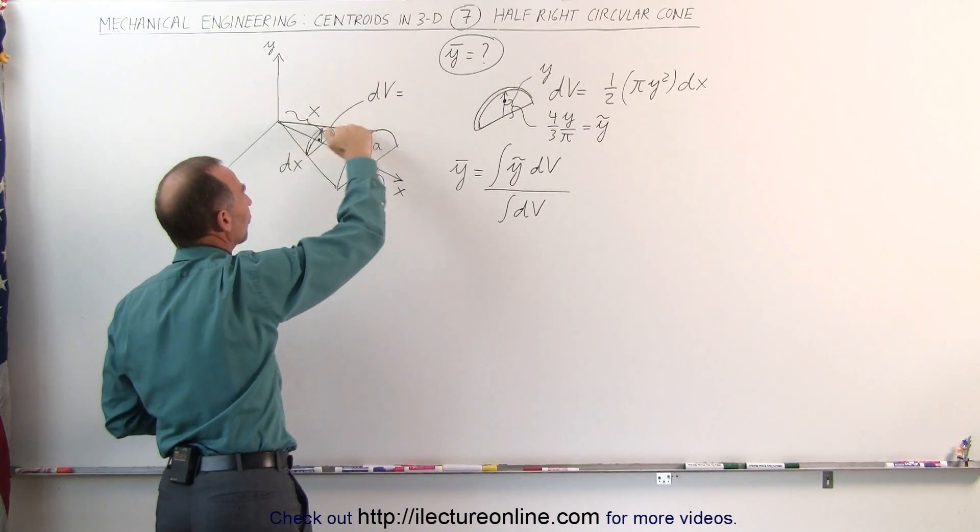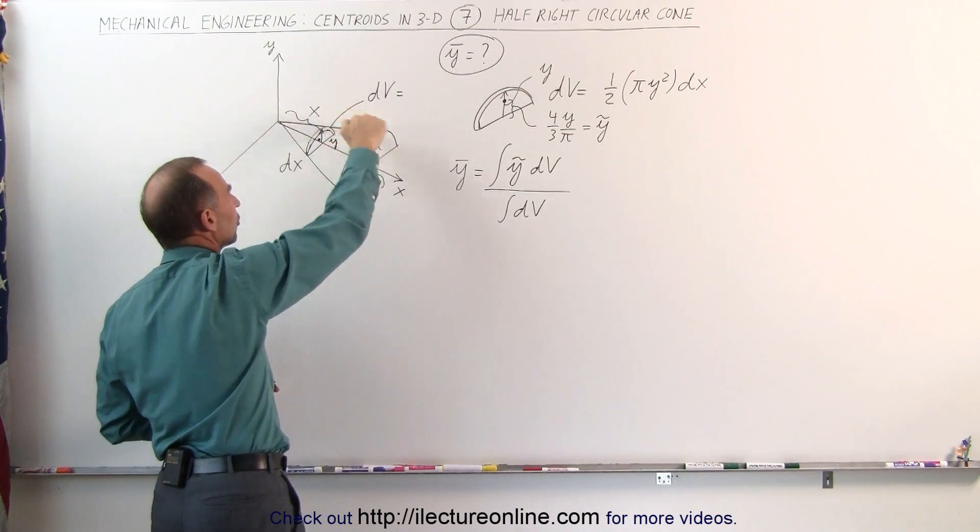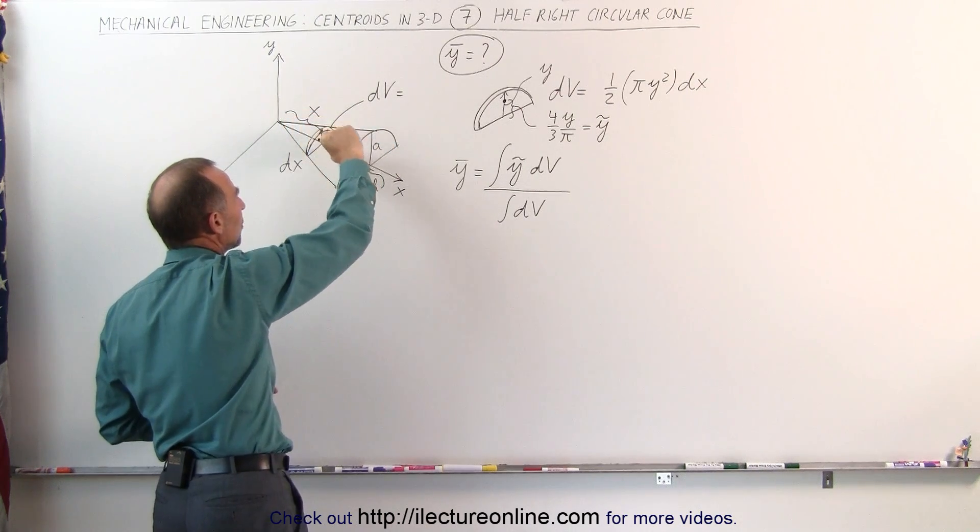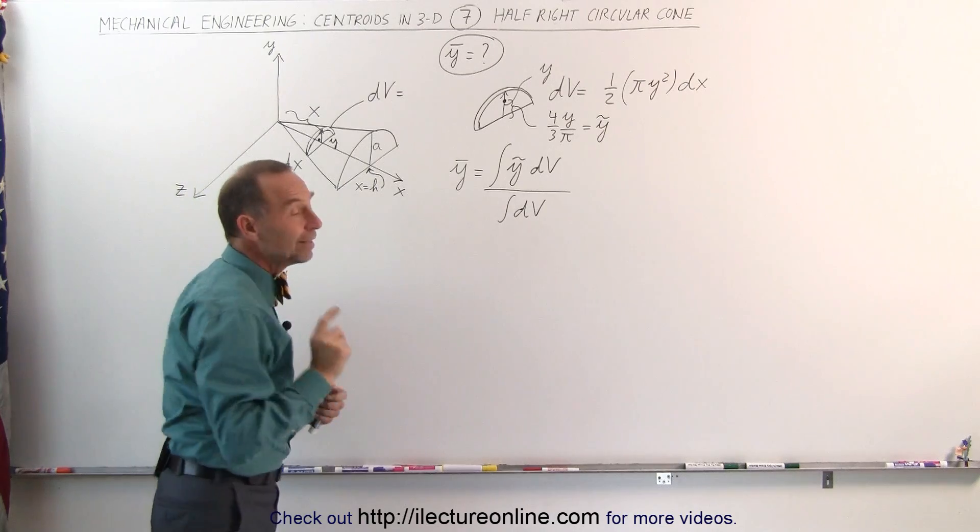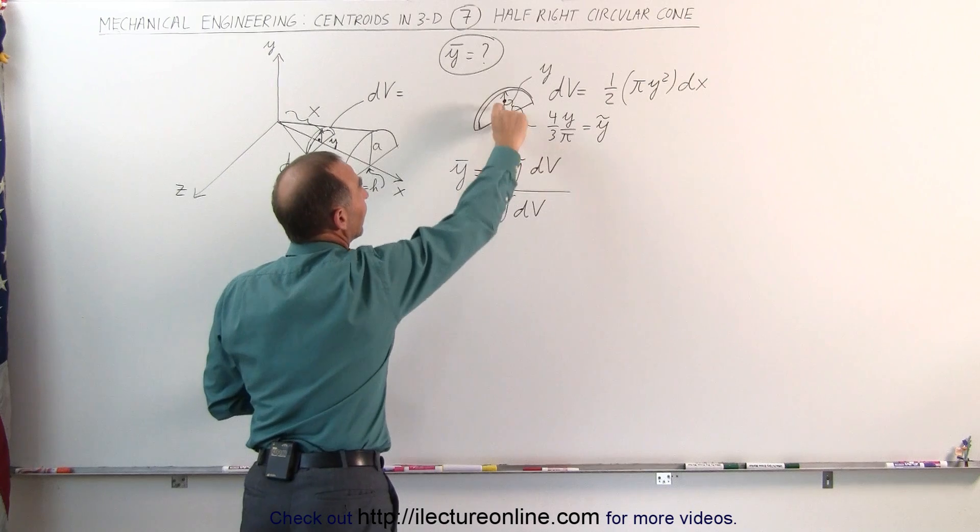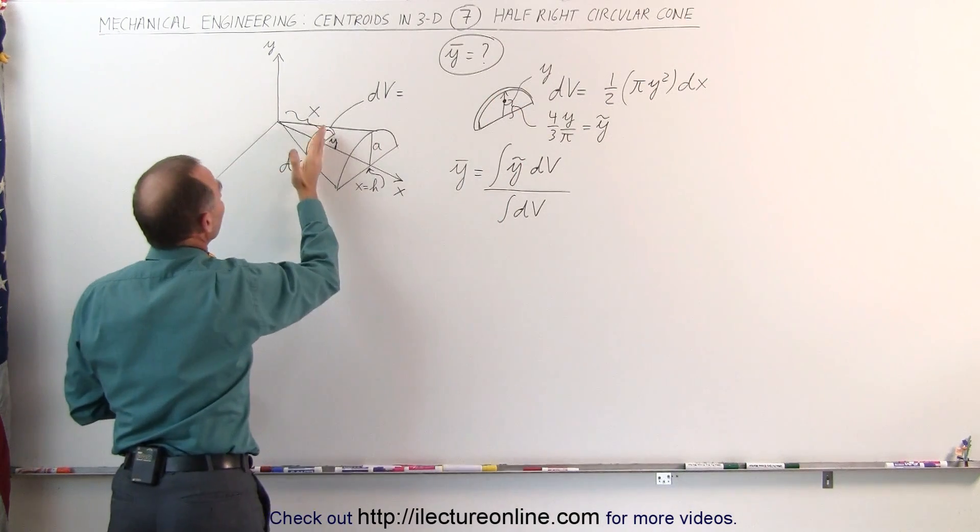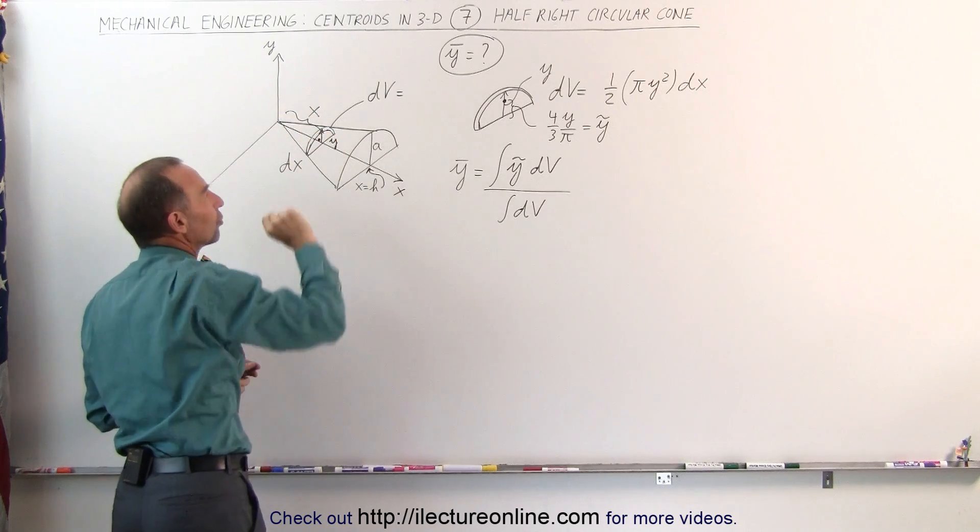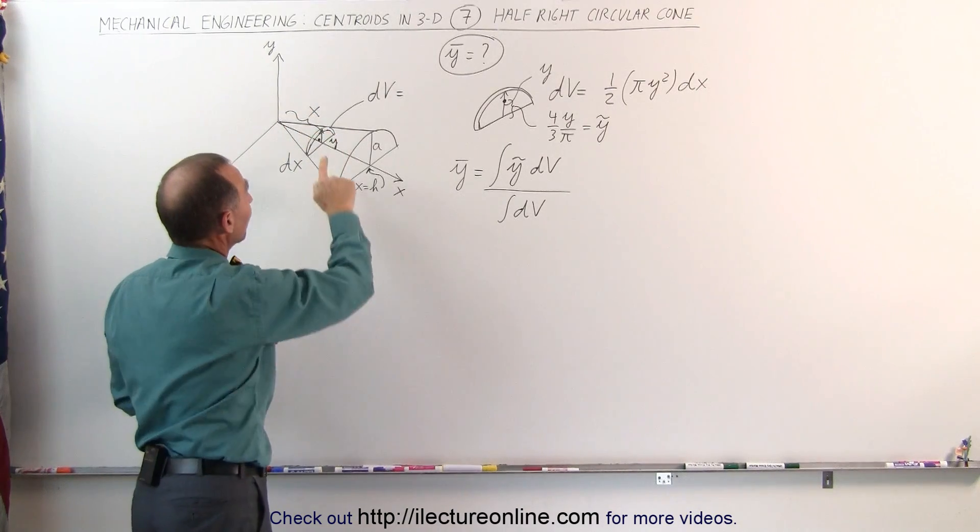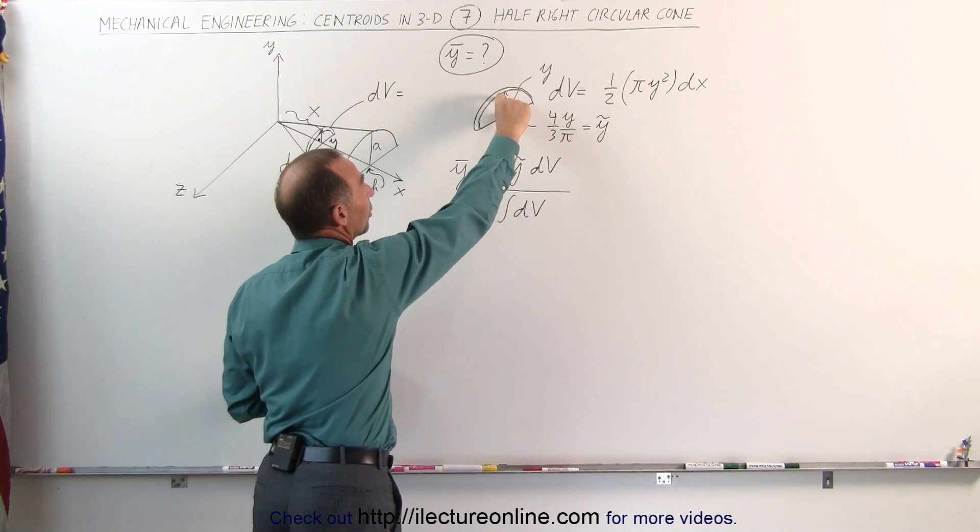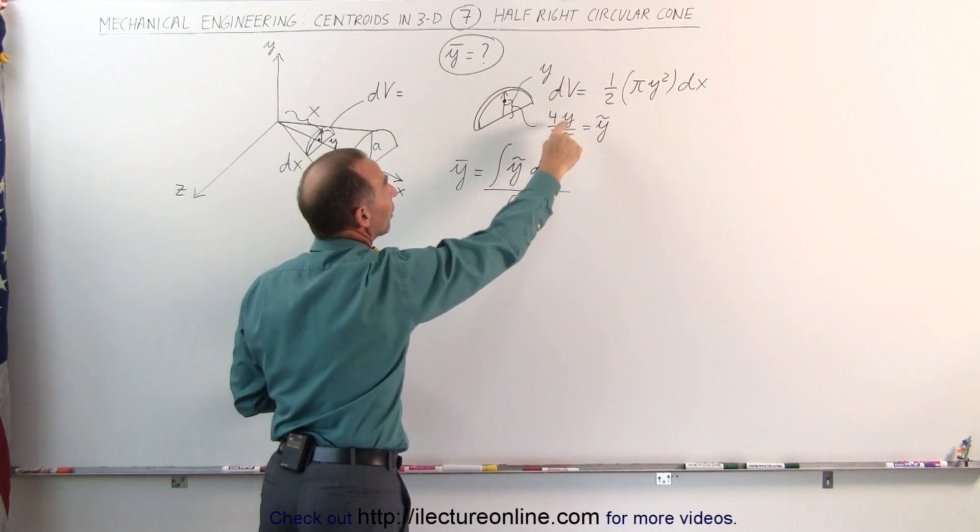You can see that here as you follow the ridge from the origin to the top of that half right circular cone. The distance will always be y to the very top of the ridge. But in this case the y coordinate of the centroid of the small little piece of the disc is the distance from the x-axis to the top. So the centroid of that small little piece is equal to four thirds y over pi.